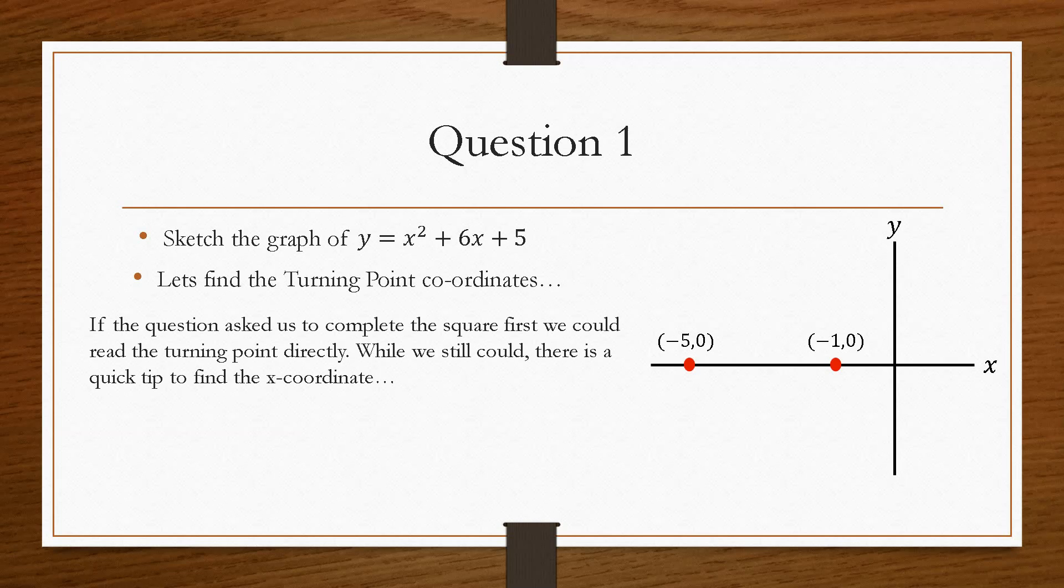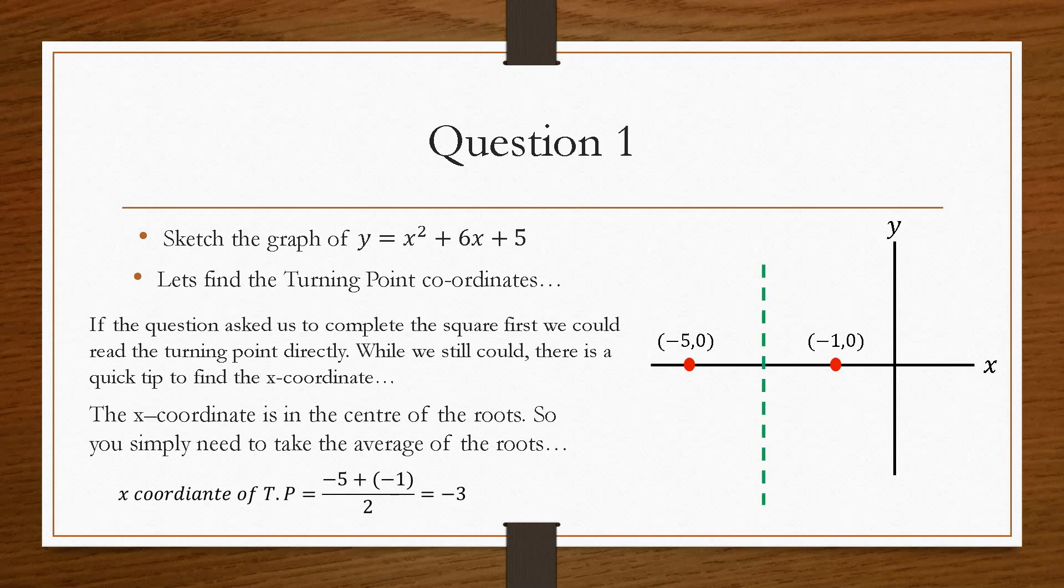the turning point of a parabola is directly in the middle of the roots. So if we take the average of the roots, we will get the x-coordinate of the turning point. So we just do minus 5 plus minus 1 is minus 6, divided by 2 is minus 3.